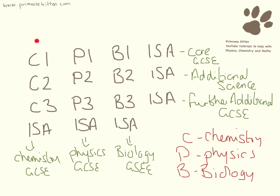Each of these units — each exam and each controlled assessment — are worth 25%. So each exam is exactly the same weighting as your ISA. Your ISA is a big, big part, so don't neglect it just because you're doing it in class. I have a whole separate set of videos all about how to do really, really well on your controlled assessment, all divided up by topic.